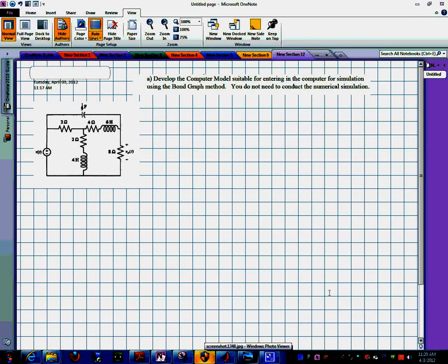Okay, here we have another example, this time of an electrical system. And let's practice on how we produce the bond-graph model.